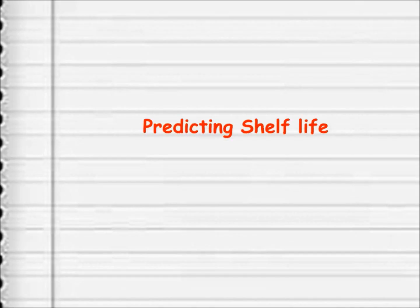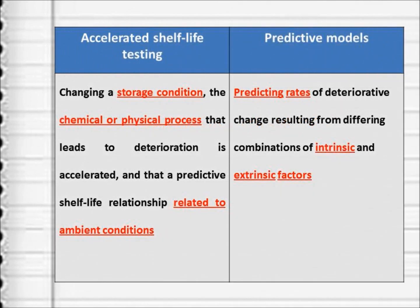Shelf life can be predicted by accelerated shelf life testing or predictive models. The basic premise of an accelerated test is that by changing a storage condition, the chemical or physical process that leads to deterioration is accelerated, and a predictive shelf life relationship related to ambient conditions can be defined. The food industry has long been interested in ways of predicting rates of deterioration change resulting from differing combinations of intrinsic and extrinsic factors.